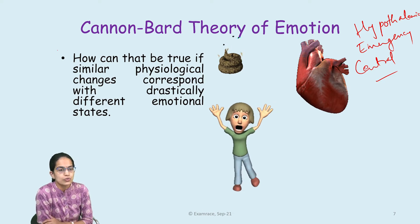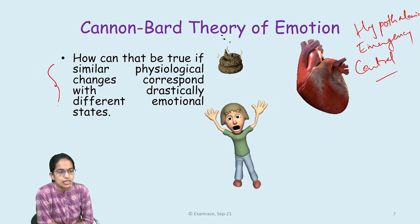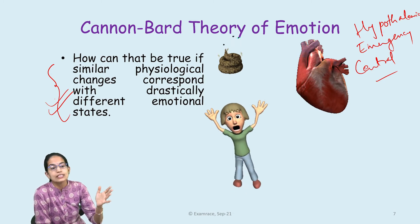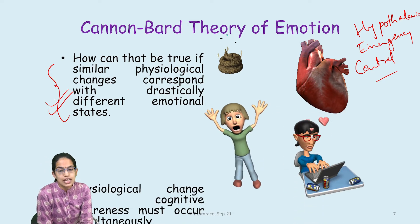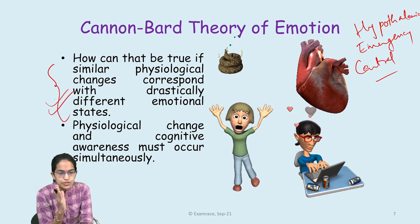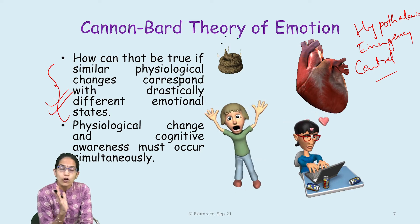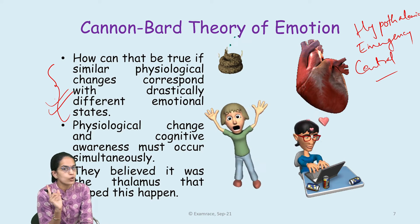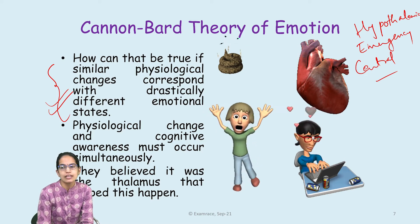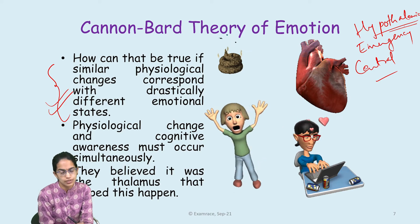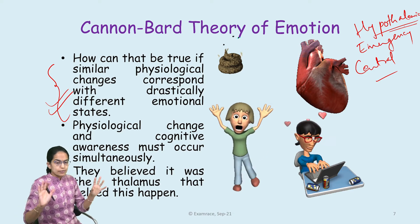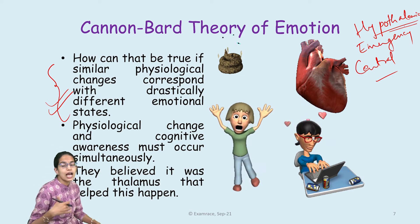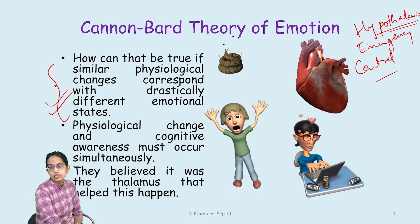How can that be true if similar physiological changes correspond with drastically different emotional states? This can be true because physiological change and cognitive awareness appear simultaneously, and that is believed to happen in the thalamus — and therefore it is also known as the hypothalamic theory. Here, both expressions appear together: the physiological change and the expression of emotions is simultaneous.